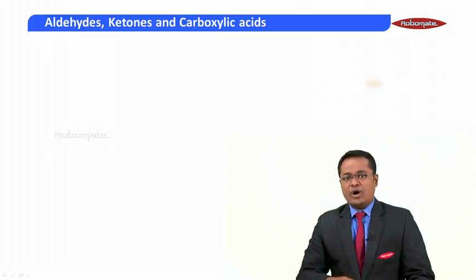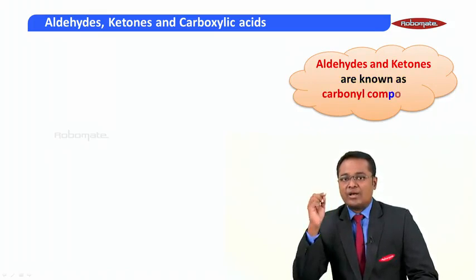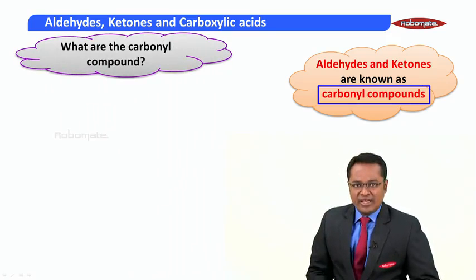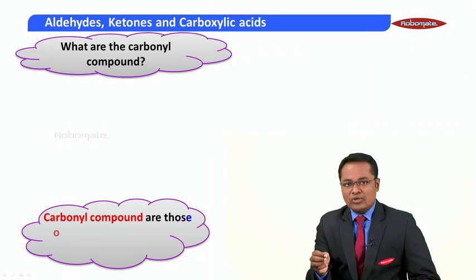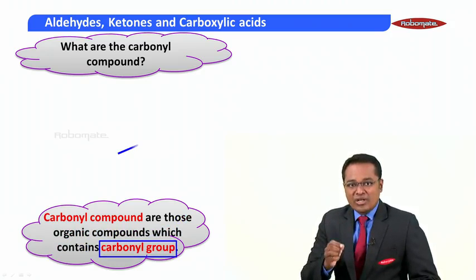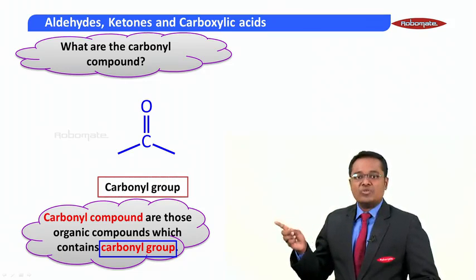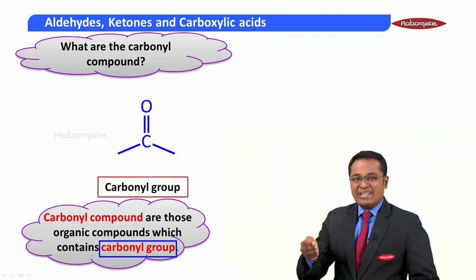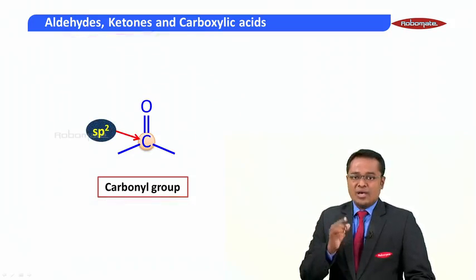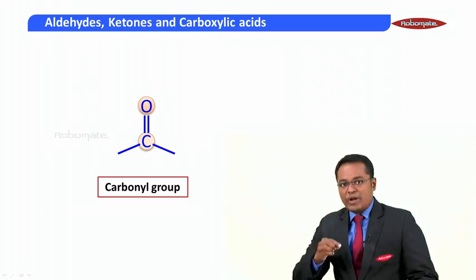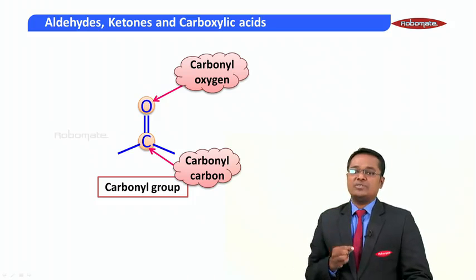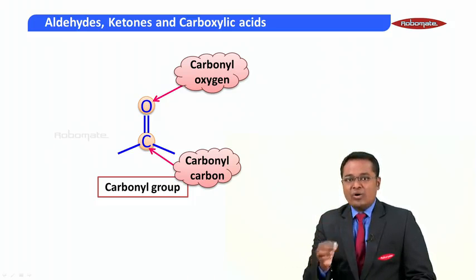Aldehydes and ketones are known as carbonyl compounds. Now, what are carbonyl compounds? Carbonyl compounds are those compounds which contain a carbonyl group. The carbon atom of this group is sp2 hybridized. The carbon atom of this group is known as carbonyl carbon, and the oxygen atom of this group is known as carbonyl oxygen.